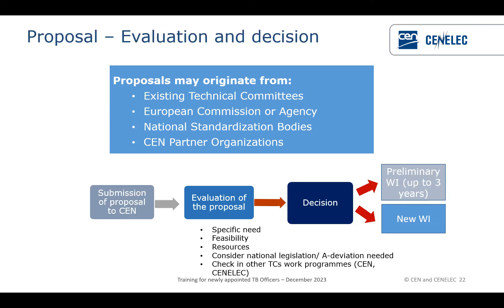The new work item is basically an identification number of the standard in the database, though the standard will then have a different reference number. If the TC wishes, instead of going first with the new work item, it is possible to choose the preliminary work item route. The preliminary work item is useful when the TC finds they need more time, because with the preliminary work item there are no deadlines for milestones. The preliminary work item has a validity of three years, after which the TC must make a decision — normally transforming it into a new work item.